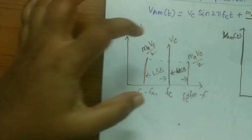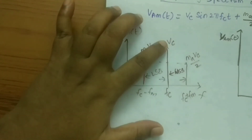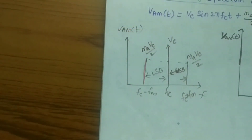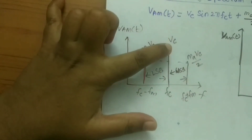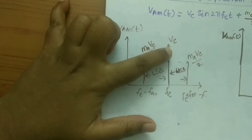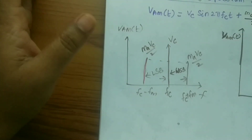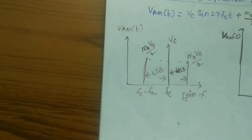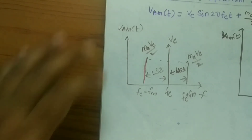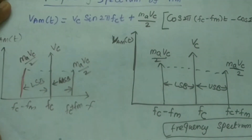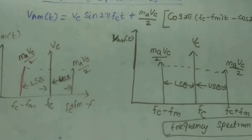The carrier signal is Vc(T) = Vc sine omega_c T. This carrier signal does not contain any information — it only carries the signal. So the carrier signal contains more power, meaning most of the power is wasted during transmission.